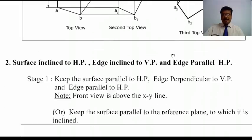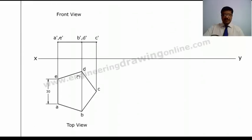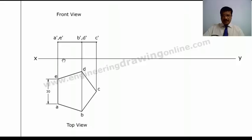Now we will go for the second case. The difference between the first case and second case is that the edge is parallel to HP. The surface is inclined to HP — similar to the first case. Edge is inclined to VP — also similar to the first case. But the edge is parallel to HP. In the first case, the edge is in the HP. The difference is: when the edge is parallel to HP, after keeping the surface parallel to HP, we get the front view some distance away from the XY line, whereas in the first case the front view is on the XY line.